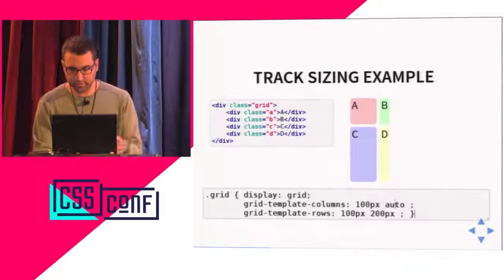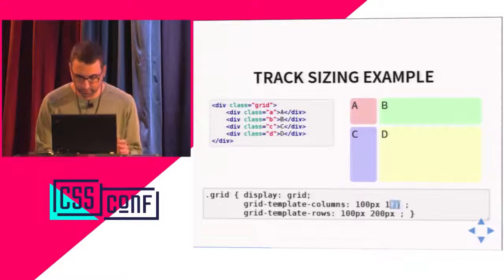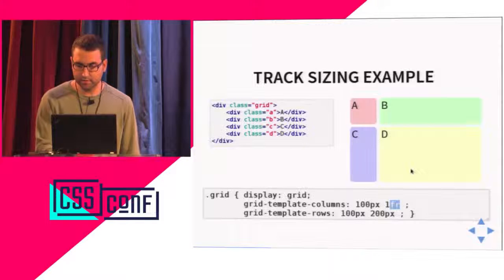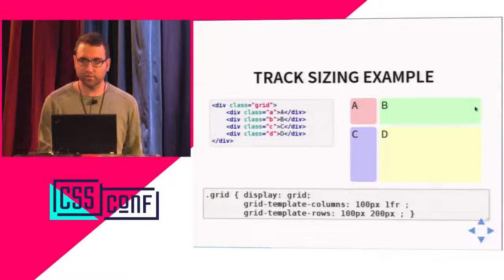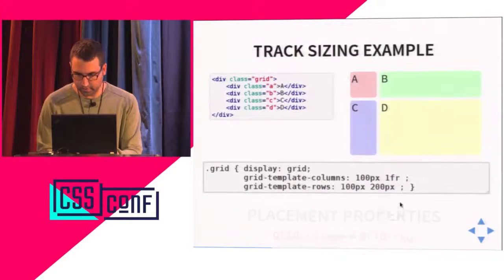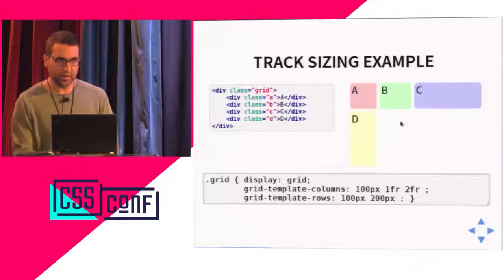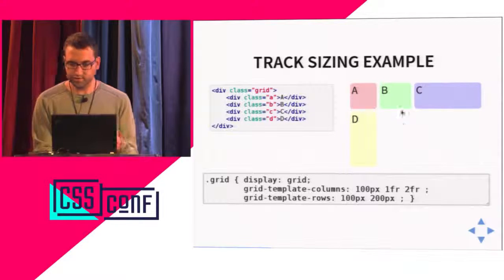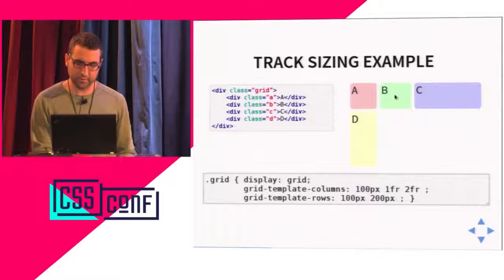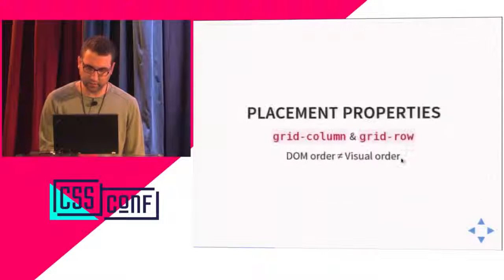The flexible sizing option uses a new unit called free space — 'fr'. So you can say take one fr for the second column, or similar to Flexbox's flex-grow. If you say 2fr versus 1fr, the first column uses double the space of the second. These are mainly the three sizing methods, and we'll see later how they actually work.